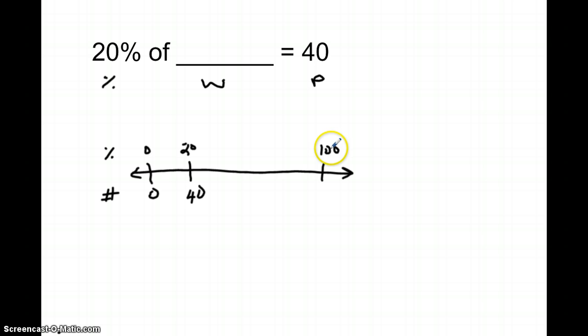Our target is to get to 100 on the top. So I can go ahead and double, which makes 40, and double the bottom, which makes 80. So 40% of our money would be $80.